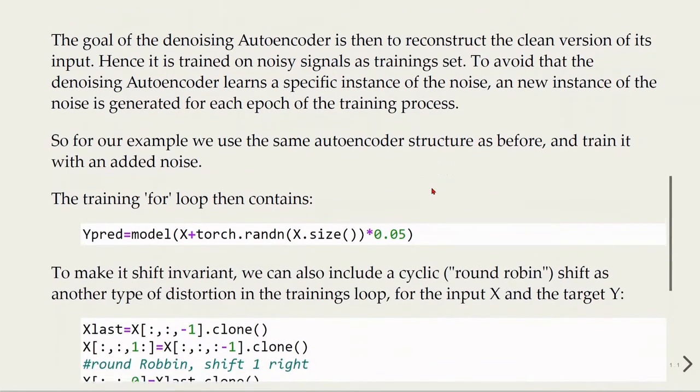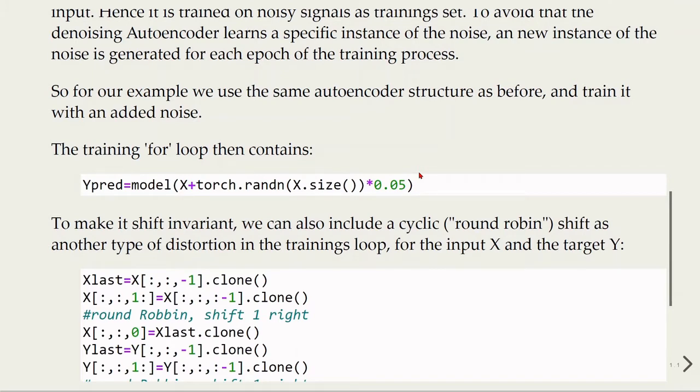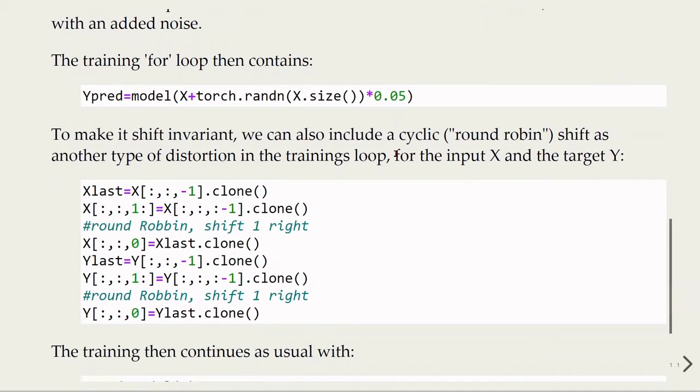In our example, we will use the same autoencoder structure as we used before, but we will train it with added noise. The training for loop will contain an expression where we are introducing the noise. Also, to make it shift invariant, we can include a cyclic round robin shift as another type of distortion in the training loop.